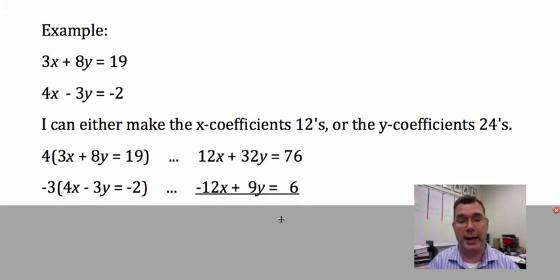The top equation, I'm going to make that x coefficient positive 12, and the second equation negative 12. That involves multiplying the entire first equation by 4, giving me 12x + 32y = 76. Then I multiply the second equation by -3, getting -12x + 9y = 6.